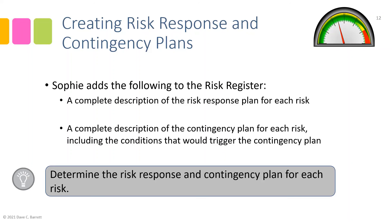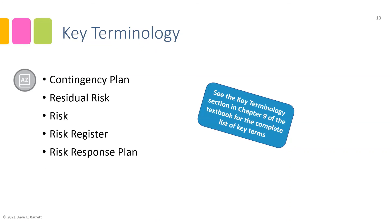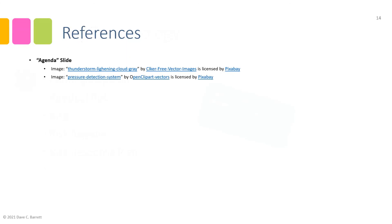Key idea: determine the risk response and contingency plan for each risk. I direct you to Chapter 9 of the textbook, which demonstrates the risk response and contingency plans created for each risk in the ongoing case study. The following key terms were introduced during this video lecture, with more information available in the key terminology section of Chapter 9. This is the end of the video lecture for Chapter 9.